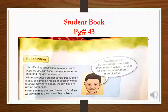Punctuation. It is difficult to read when there are no full stops, as you can't see where one sentence ends and the next one stops. When sentences are not punctuated with full stops, exclamation marks or question marks to show they have ended, we say they are run-on sentences. When commas are used instead of full stops, we say there is a comma splice problem.